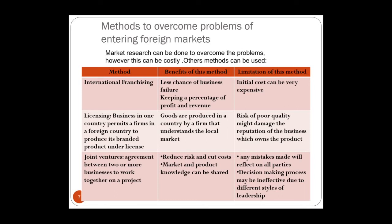Another option is licensing — giving permission to other businesses in other countries to produce your brand under license. A common solution is a joint venture, where, for example, a company in Saudi Arabia partners with a company in Lebanon to produce or work on a project together. This pools risk and shares knowledge. However, mistakes can happen and decision-making may be ineffective, especially if there are different styles of leadership or unclear management plans.